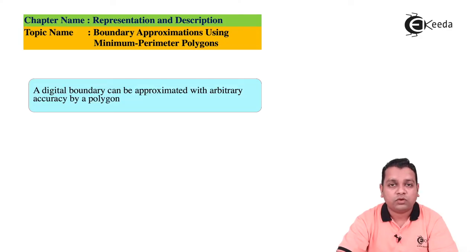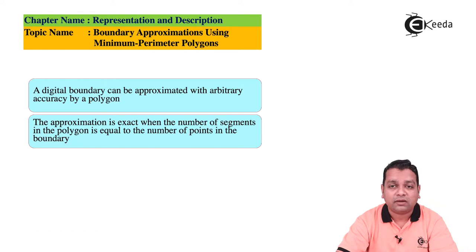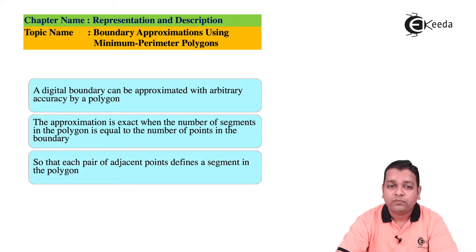A digital boundary can be approximated with arbitrary accuracy by using a polygon. The approximation is exact when the number of segments in the polygon equals the number of points in the boundary, so that each pair of adjacent points defines a segment in the polygon.